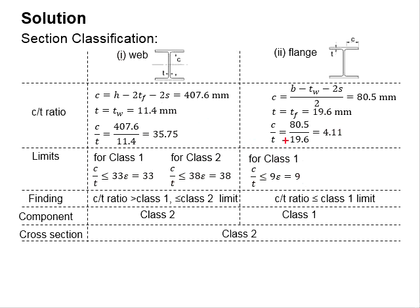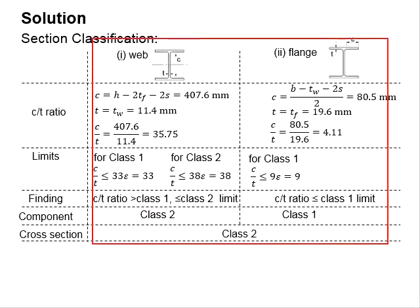It is found that the c per t ratio for the flange is less than the limit for Class 1. Therefore, the flange is considered as Class 1. As for the web, it is greater than Class 1 but less than Class 2. Therefore, the web is considered as Class 2. With that, the entire section is considered as Class 2.